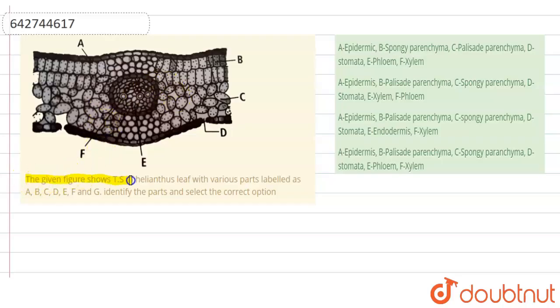The question here is that the given figure shows the TS of Helianthus leaf with various parts labeled as A, B, C, D, E, F, and G. So identify the parts and select the correct option. Let's see the answer now.